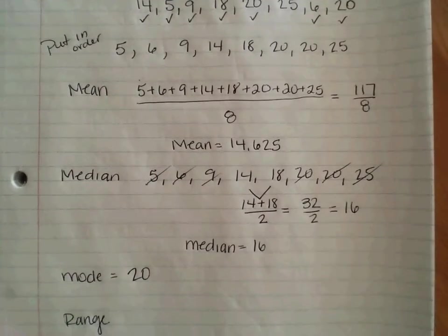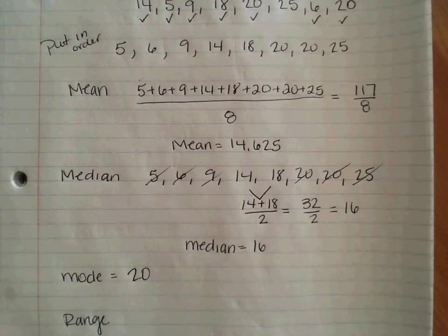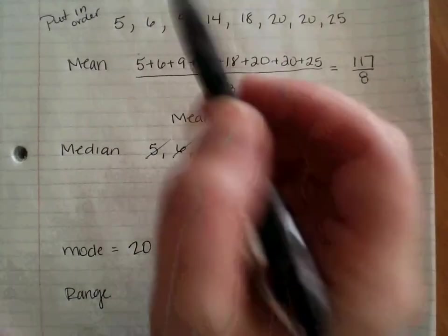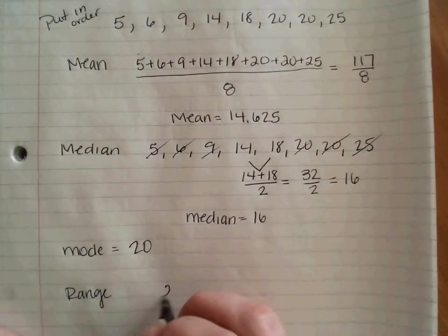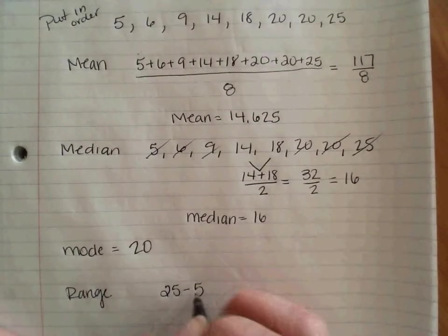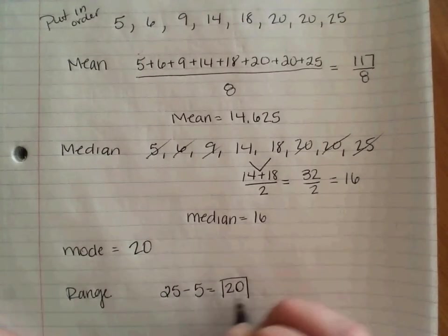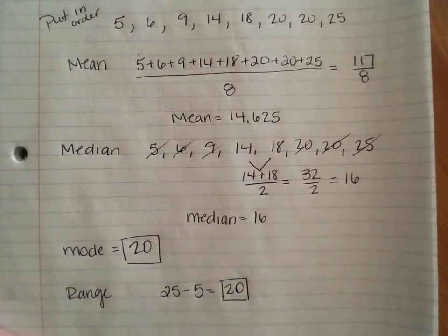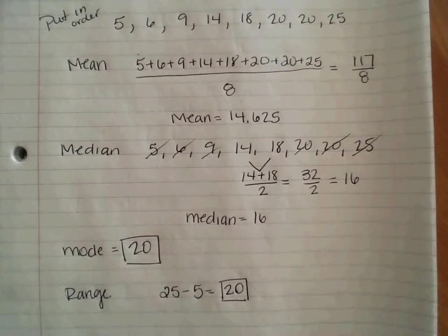And my range. My range is my distance from my smallest to my largest number. The distance from my smallest to my largest number. So I need to go from 25 and 5. So I'm going to subtract these. So I'm going to do 25 minus 5, which gives me 20. So my range is 20. I have 20 different numbers in between my largest and smallest value.